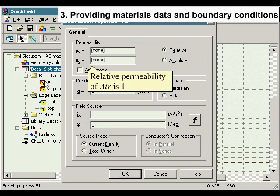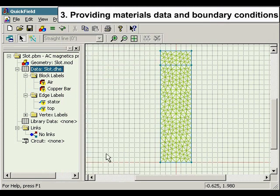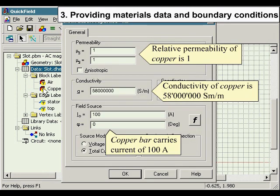Relative permeability of air is 1. Relative permeability of copper is 1. Conductivity of copper is 58 million Siemens per meter. Copper bar carries current of 100 amps.